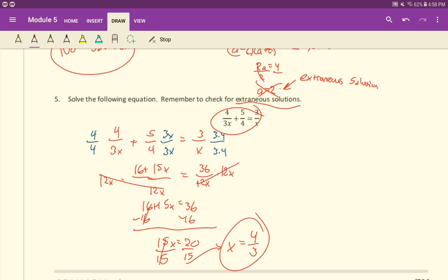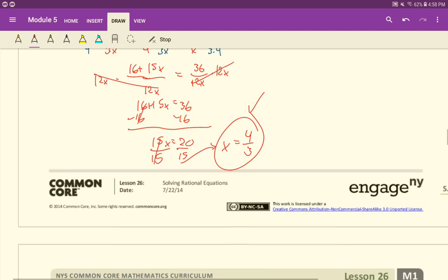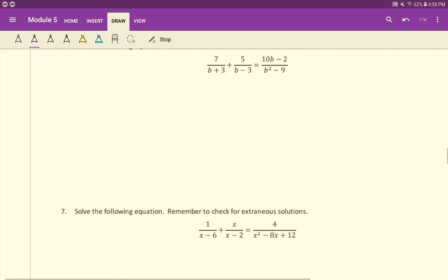If we check it back up in here in the original equation, we can see just with our eyes that the only x value that would cause us problems here would be if x is zero. But x is four-thirds, so we're good. It's going to be a good answer. All right? We'll stop there, and we'll get into exercises six and seven in the next video. So we'll see you next time.